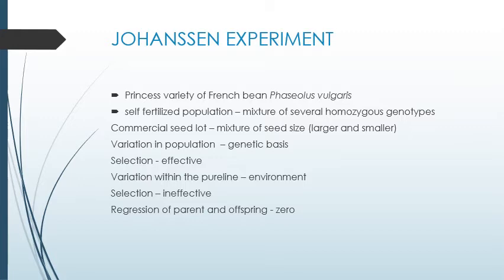He concluded his experiment with three different confirmatory evidences. Evidence number one: the commercial seed lot consists of a mixture of several homozygous genotypes. He selected larger and smaller seed sizes, and the progeny from the larger seeds produced larger seeds, and the smaller seeds produced smaller seeds. So variation in a population has a genetic base, and selection is effective in the population — but not within a pure line.